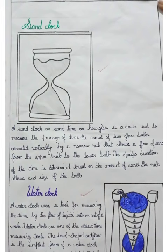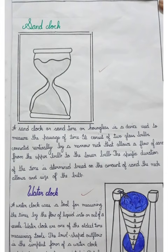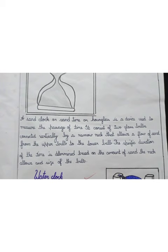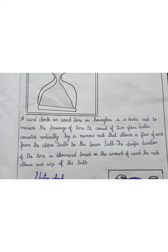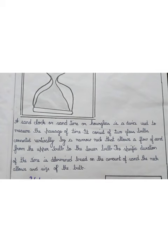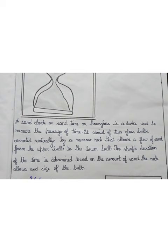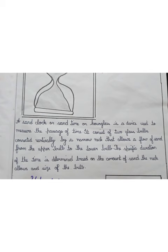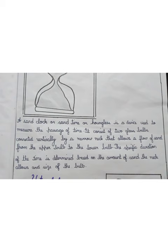The next device is the sand clock. A sand clock, sand timer, or hourglass — these are three names for the sand clock. It is a device used to measure the passage of time. It consists of two glass bulbs connected vertically by a narrow neck that allows a flow of sand from the upper bulb to the lower bulb. The specific duration of time is determined based on the amount of sand the neck allows and the size of the bulb.